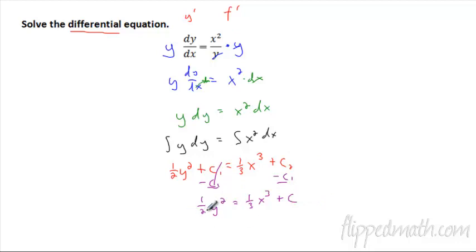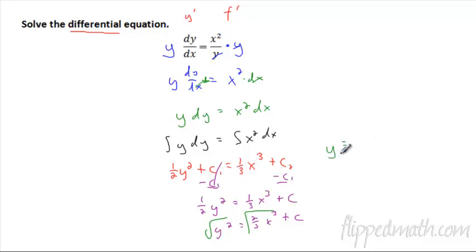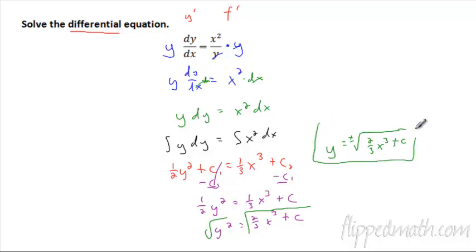Let's finish this out. Times both sides by 2, so you get y squared equals two-thirds x cubed. And again, you could write 2c, but there's no reason — it is still a constant. Then the finale: we've got to square root both sides. So y equals plus or minus the square root of two-thirds x cubed plus c. That c is under there. So there is the original function — I just solved that differential equation using separating the variables.